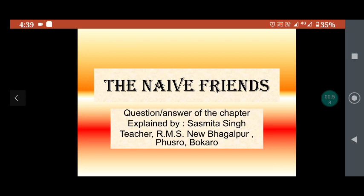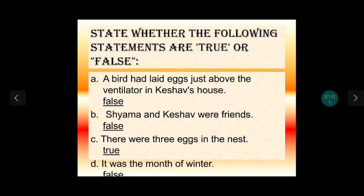Let's start the New Friends remaining exercise. State whether the following statements are true or false. आपको बताना है कि जो statements हैं वो true हैं या false हैं — अगर सही हैं तो true लिखेंगे, गलत हैं तो false लिखेंगे. Statement A: The bird had laid eggs just above the ventilator in Keshav's house. चिरिया ने अंडे Keshav के घर के ventilator के ठीक ऊपर दिये थे? ये गलत है — चिरिया ने तो अंडे cornice पर दिये थे, इसलिए इसमें हम false लिखेंगे.